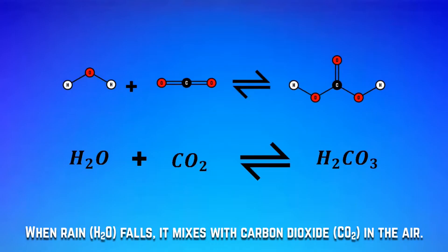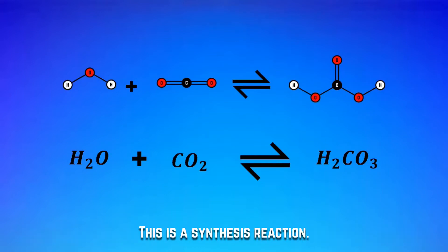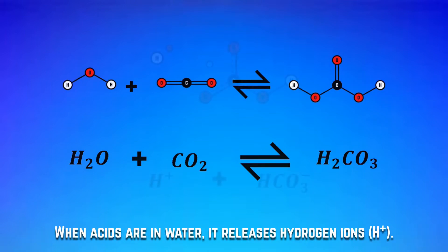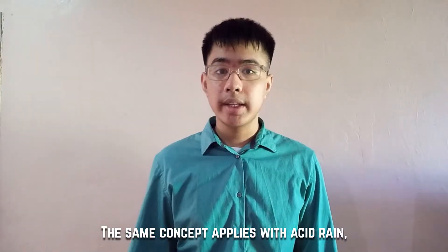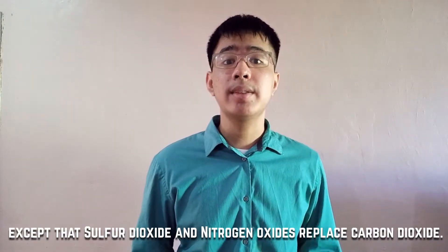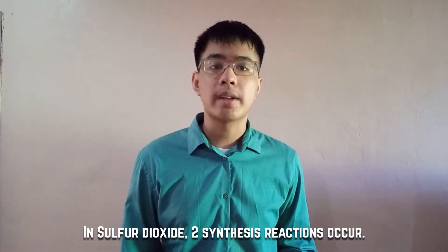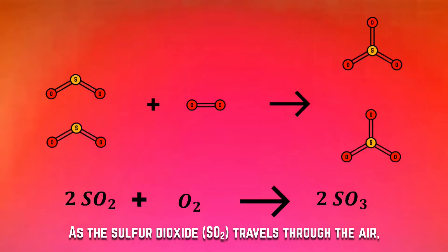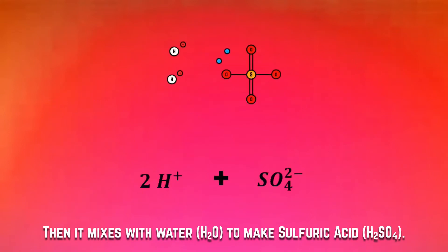Now let's look at the chemical reactions happening in acid rain. When rain falls, it mixes with carbon dioxide in the air, and a weak acid called carbonic acid is formed. This is the synthesis reaction — when two elements or compounds mix together to form a single compound. When acids are in water, they release hydrogen ions. The same concept applies with acid rain, except that sulfur dioxide and nitrogen oxides replace carbon dioxide. In sulfur dioxide, two synthesis reactions occur: as the sulfur dioxide travels through the air, it reacts with oxygen to form sulfur trioxide, then it mixes with water to make sulfuric acid.